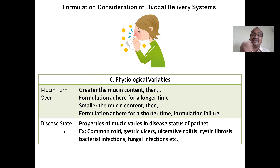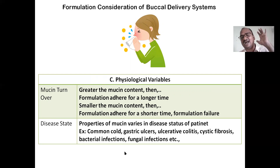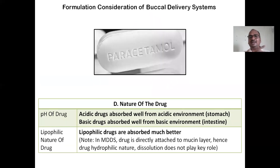Disease status is also important. In some GIT diseases such as common cold, gastric colitis, ulcerative colitis, cystic fibrosis, bacterial infections, and fungal infections, the nature of the mucus varies because of the disease condition, and this affects adhesion accordingly.